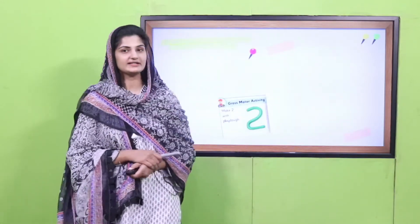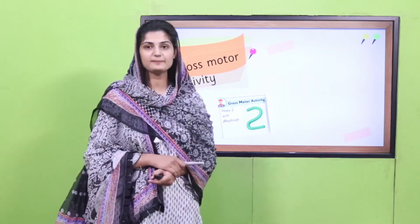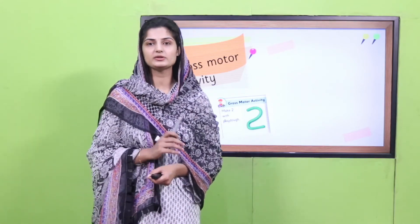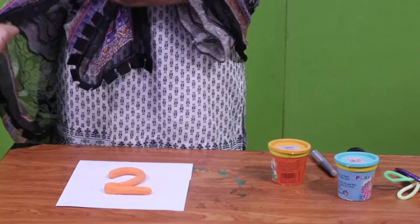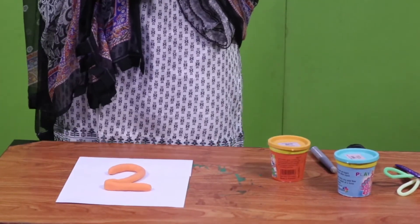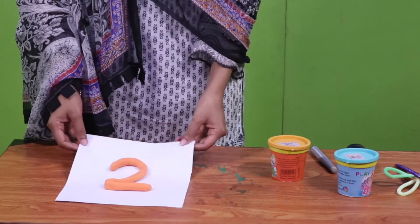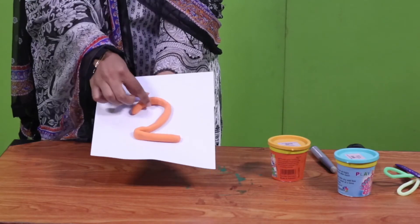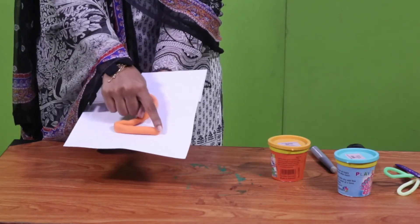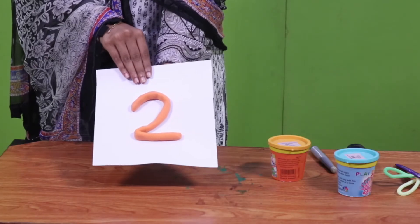Now it's gross motor activity time. I want your teacher to give you play-doh. Pause your video here and come back with the play-doh. Okay playgroup, hopefully your teacher has given you play-doh. We are going to make number two with the play-doh. I have made number two like this — this is the formation of number two made with play-doh. Now pause your video, take help from your teacher, make a number two like this, and come back.